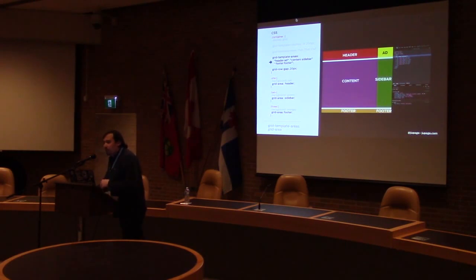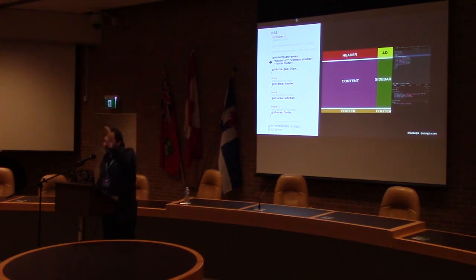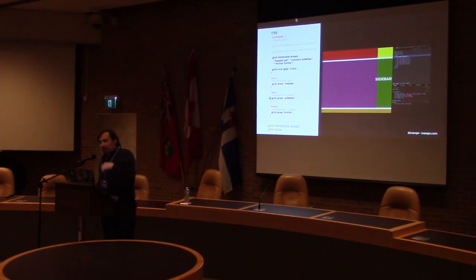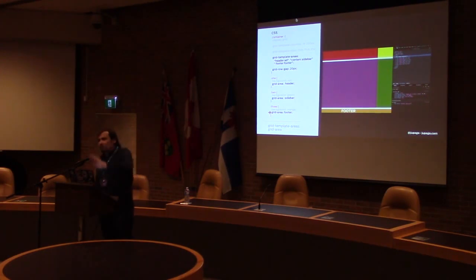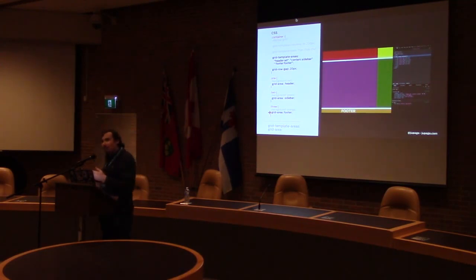Grid template areas: if you have a grid and you set up your cells, you can work with named areas. You just say a header goes up there, then an ad, content, sidebar, footer — and then you just assign which container should be the header, the sidebar, the footer. Imagine a website where you have six or seven things and as it grows, you shuffle them around however you want. It's also super accessible, because in your HTML you go header, subheader, paragraph — but with the CSS you're changing the visual layout. This is a native, pretty awesome way of working.